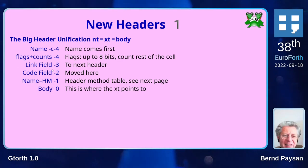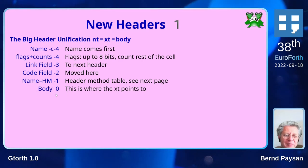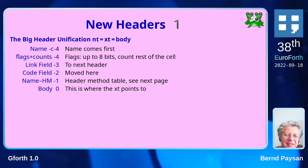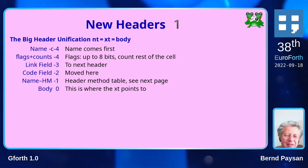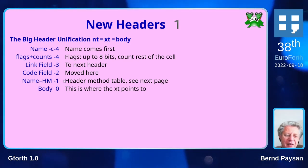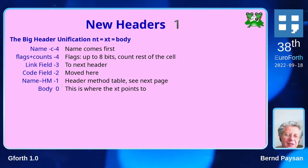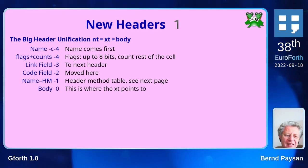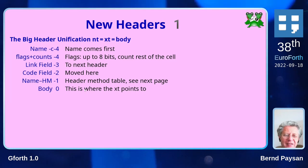Then there's a link field and a code field that was moved from offset 0 to minus 2, to get the body at 0. Then we have the name header method table at minus 1. This equals the layout of MiniOF2, so you can use MiniOF2 to address all these header method functions. The body starts at address 0.